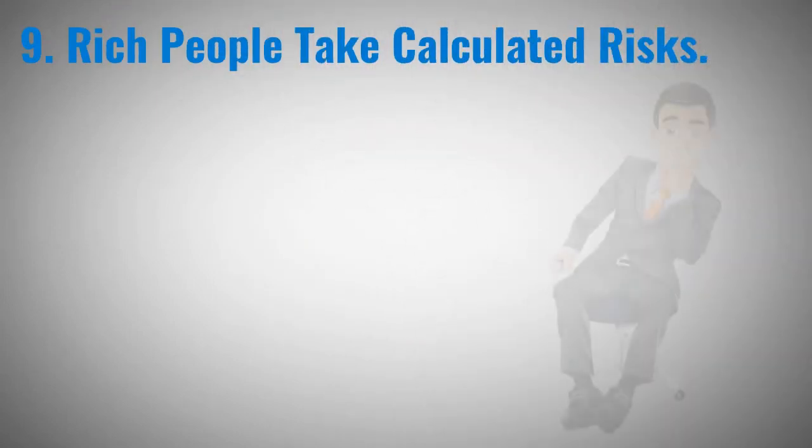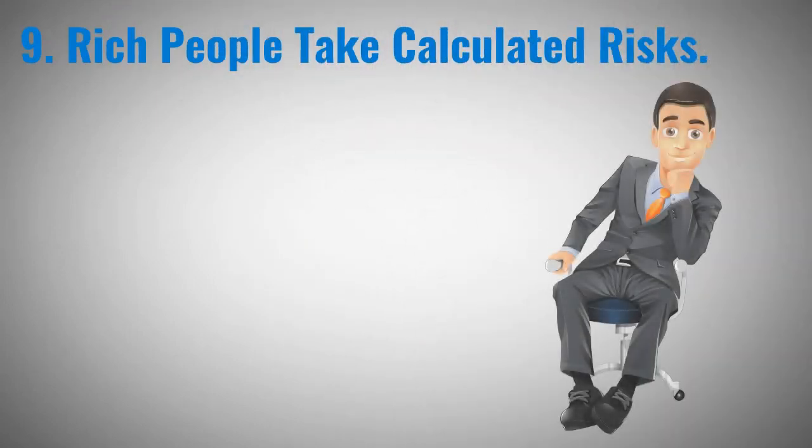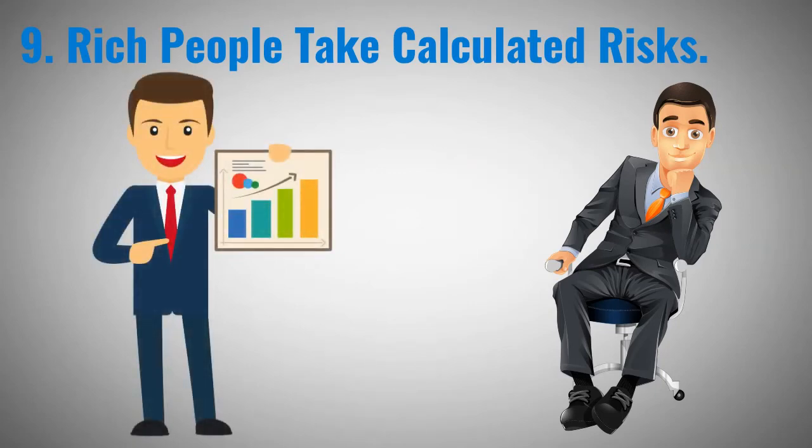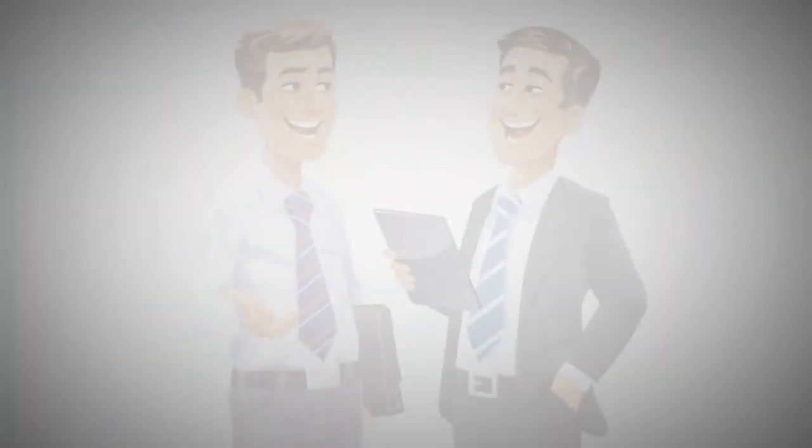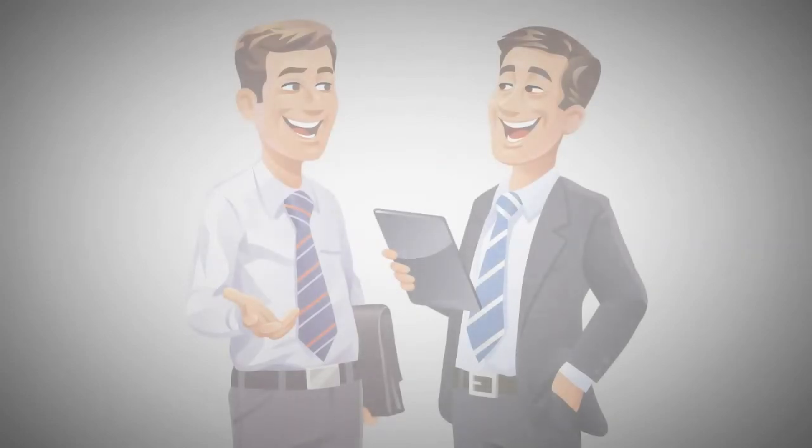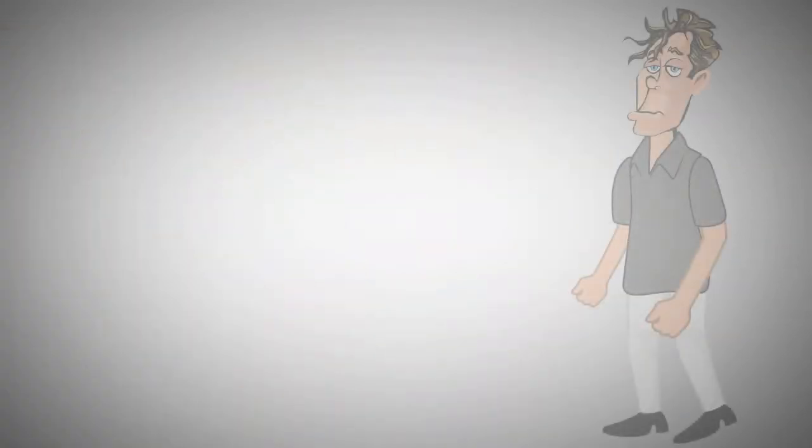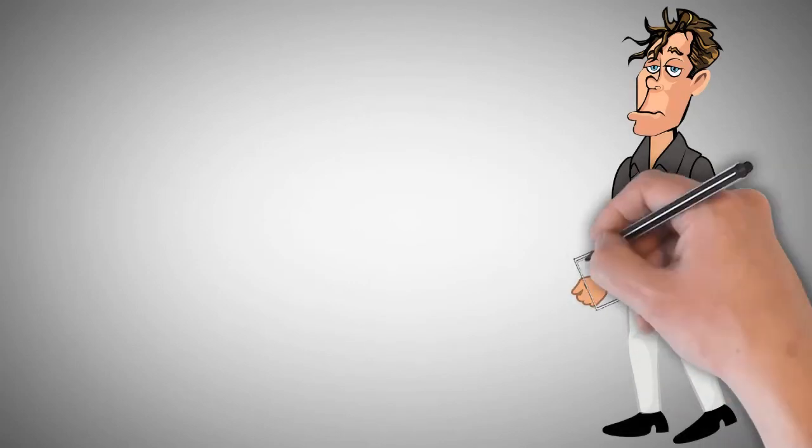Rich people take calculated risks. The rich don't rush before they make financial decisions, they do what they can to mitigate risk. Before they put their hard-earned money into a business, they do their research and analysis to determine which options best suit their financial needs and business desires. They make financial decisions by asking themselves questions about a new business venture or plan and seek advice when necessary.